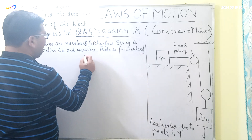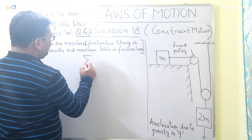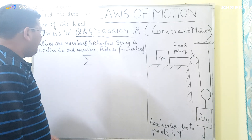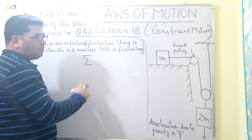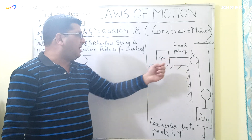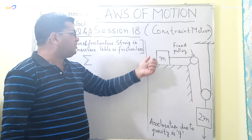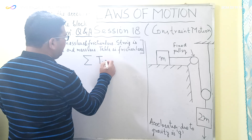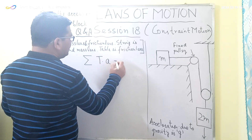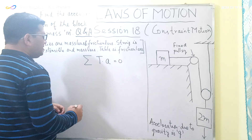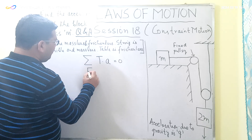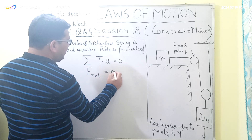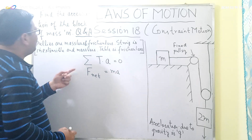Since this is an example of constraint motion, I will use two equations: first, the algebraic sum of the product of the tension in the string and the acceleration of the individual blocks is equal to zero, that is T·A = 0. Second, the net force on each block is equal to M times A.